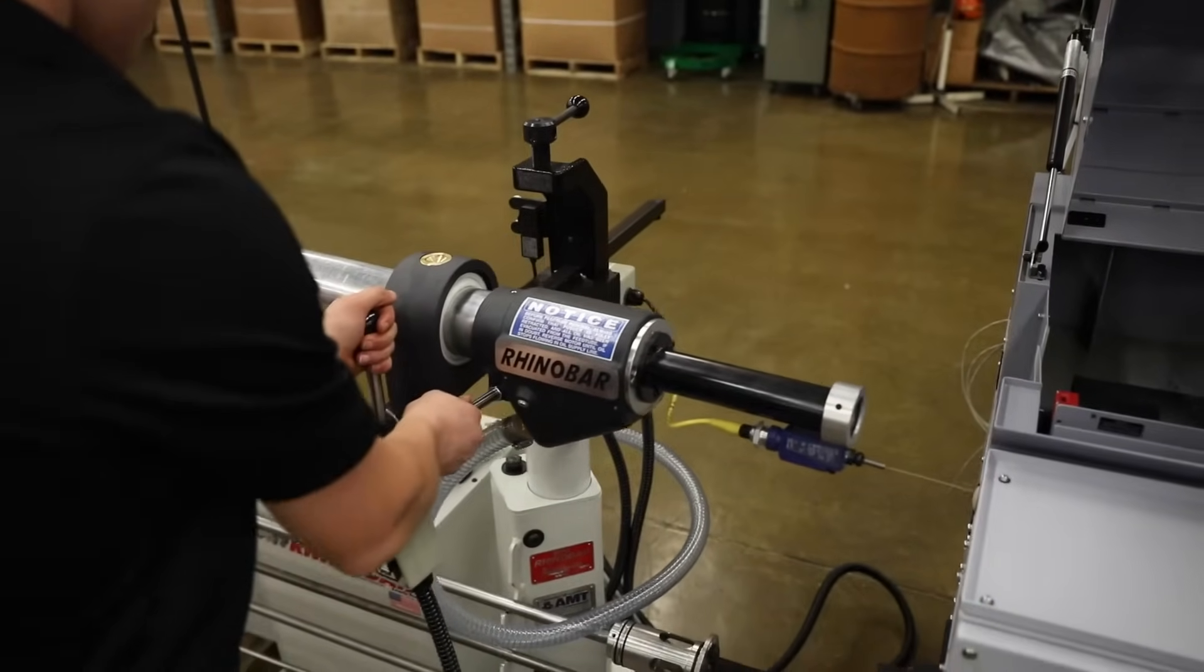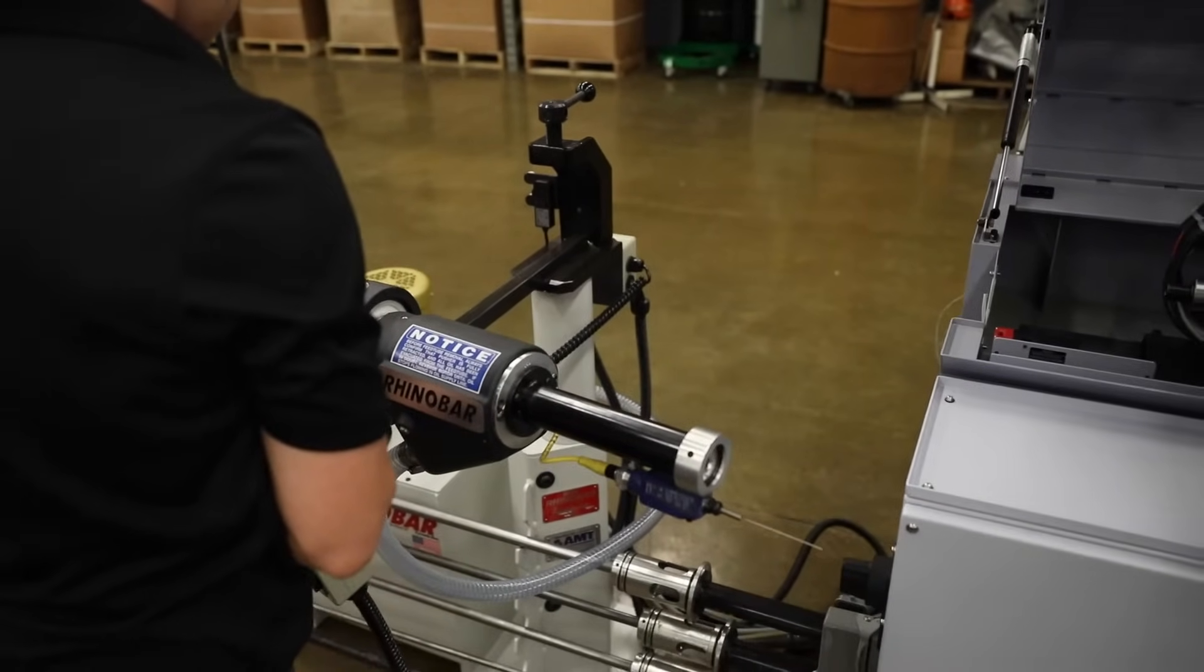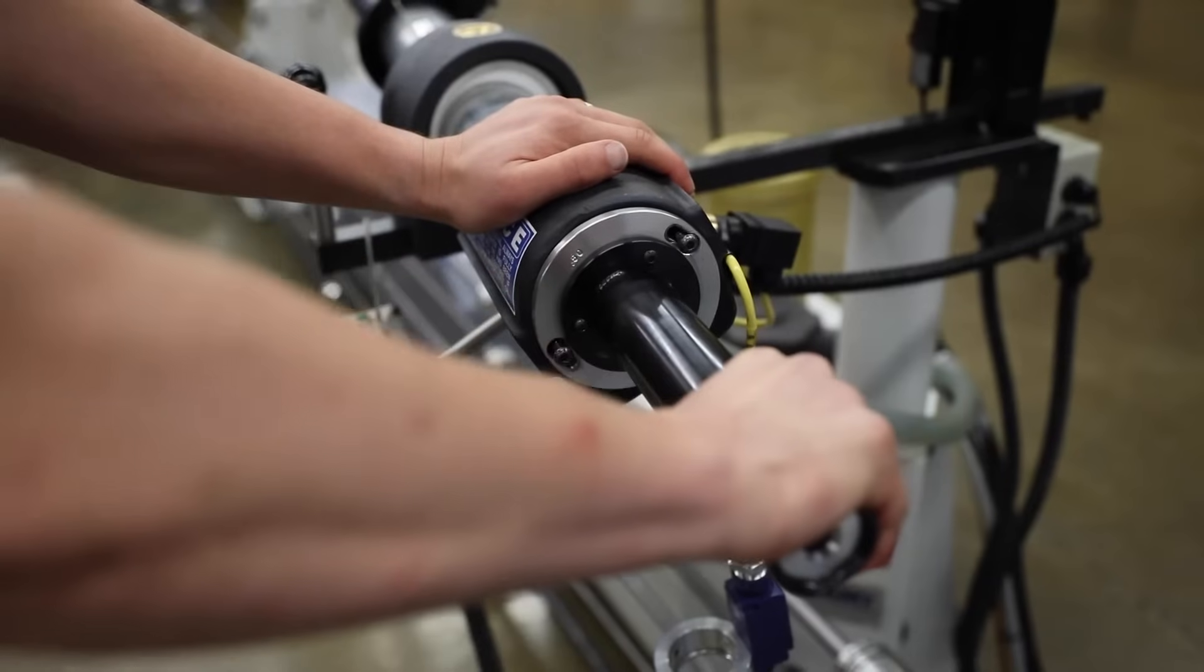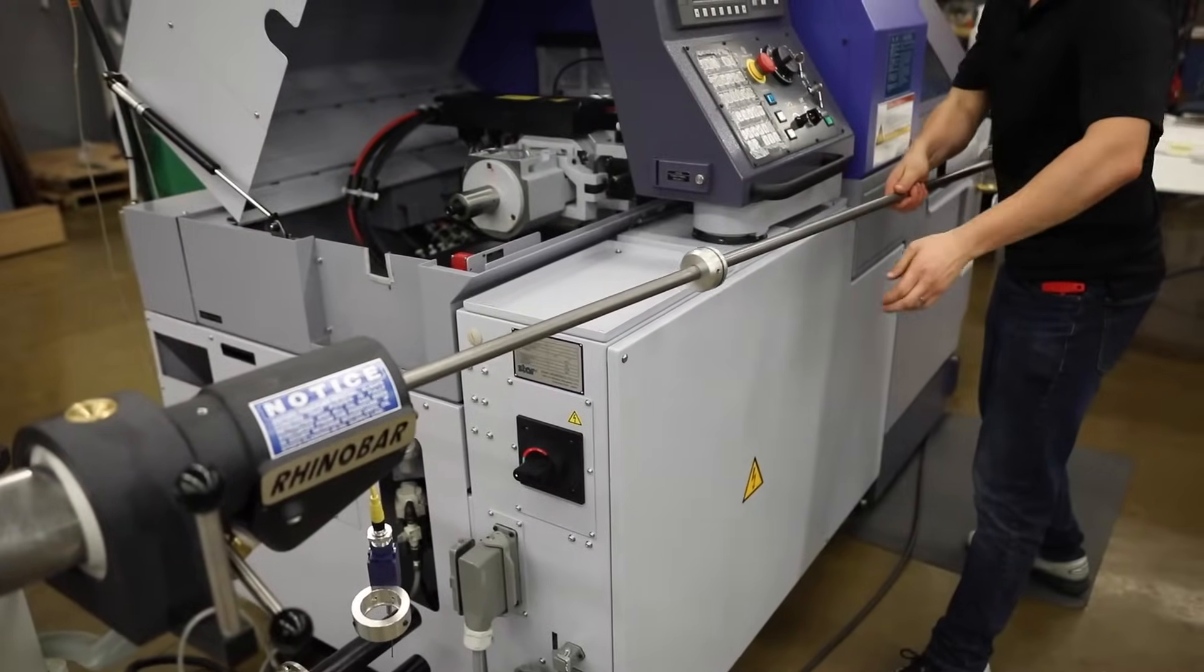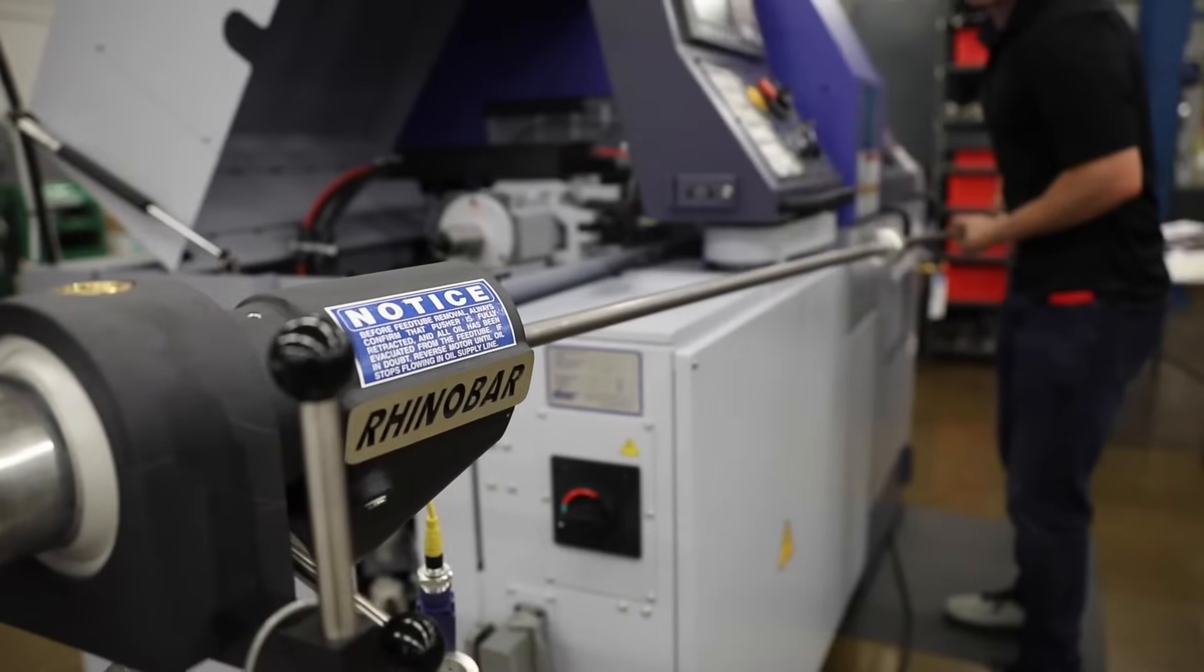Changing the feed tube can be done in less than 3 minutes due to the front swing-out mechanism. This feature provides simplicity and ease when reloading bar stock, saving time and increasing production.